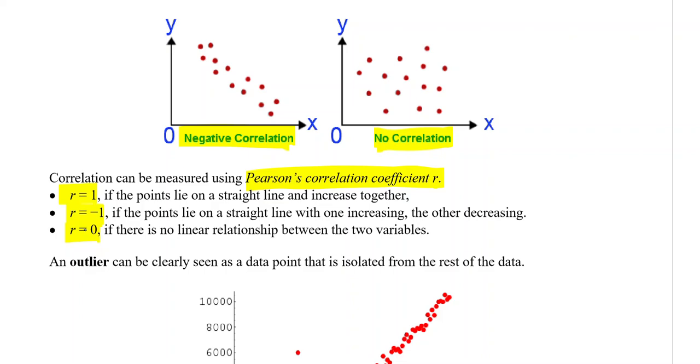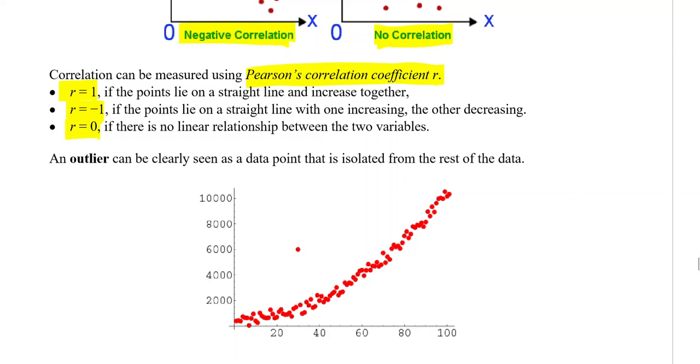An outlier can be clearly seen as a data point that is isolated from the rest of the data. When you see a result like that, way out there by itself, sometimes as a statistician you have to question what caused that one to be way out there. Is it a valid result? Maybe it should be excluded. Maybe there was something faulty with the equipment or someone filled something in wrong in a form. You've got to decide whether or not that data should be included.